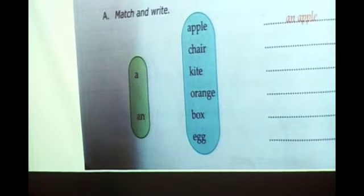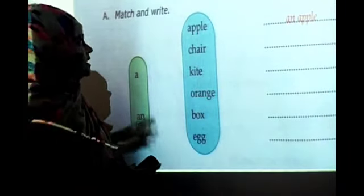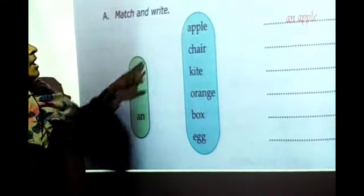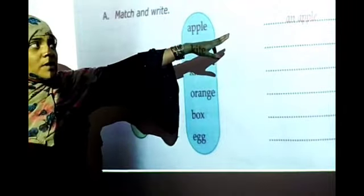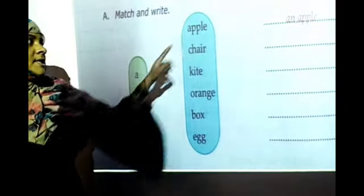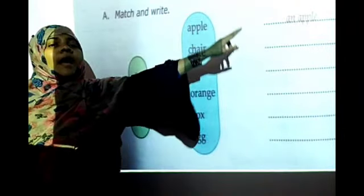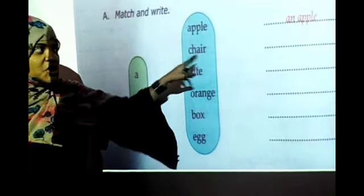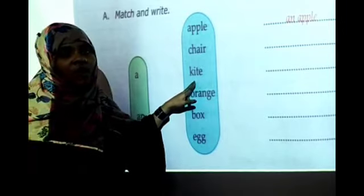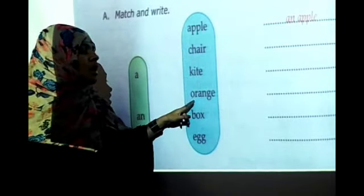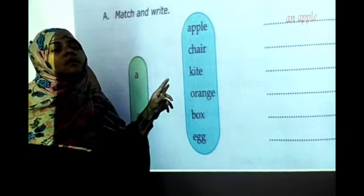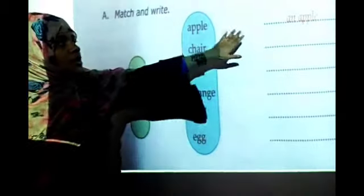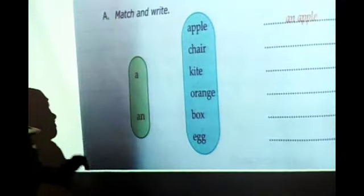See here — match and write. This bit I will give you as more work. These are the words and these are the articles — you have to match and write. For example: An apple — A begins with a vowel, so we use An. A chair — C is a consonant, so we use A. Kite — K is a consonant, use A. Orange — O is a vowel, use An. Understood?